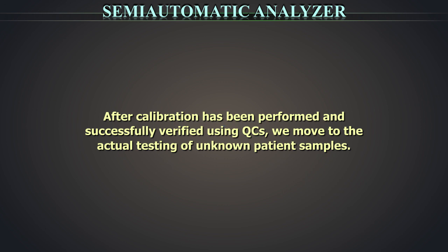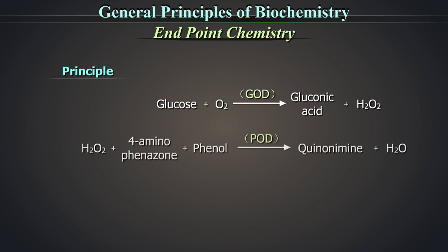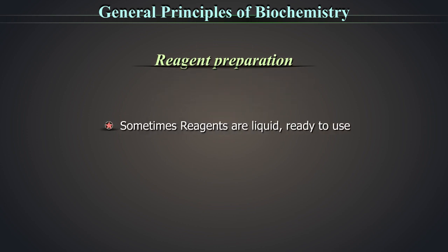After calibration has been performed and successfully verified using QCs, we move to the actual testing of unknown patient samples. Glucose is oxidized into a red-colored compound. The intensity of the red-colored compound is proportional to the glucose concentration and is measured at 505 nm, which is 490 to 530 nm. Regarding reagent preparation: sometimes reagents are liquids, ready to use.